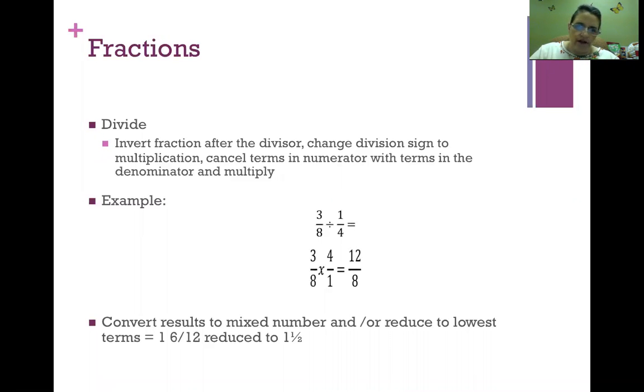When we divide a fraction, we don't do that very well, so rather than divide, we take the second fraction and invert it, then we multiply. In our example, we've taken one-fourth, the second fraction, inverted it to 4 over 1, and multiply straight across. 3 times 4 is 12, 8 times 1 is 8. Then we need to reduce it to its lowest terms. We take the improper fraction 12 over 8, reduce it to 1 and 6/12, and then reduce that again to 1 and a half.